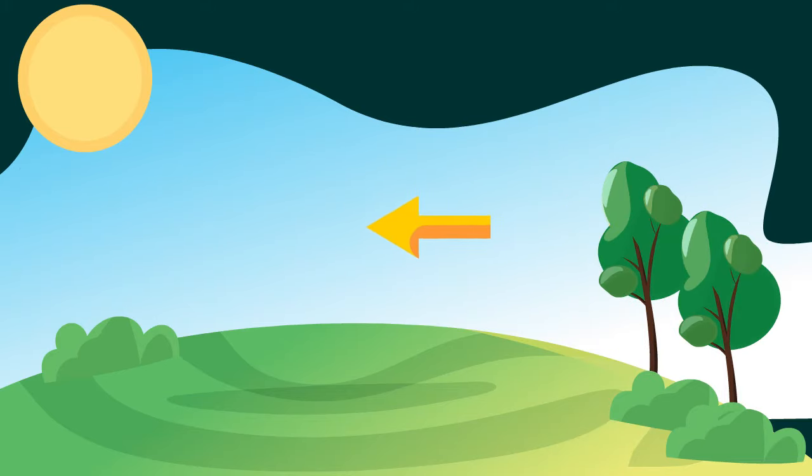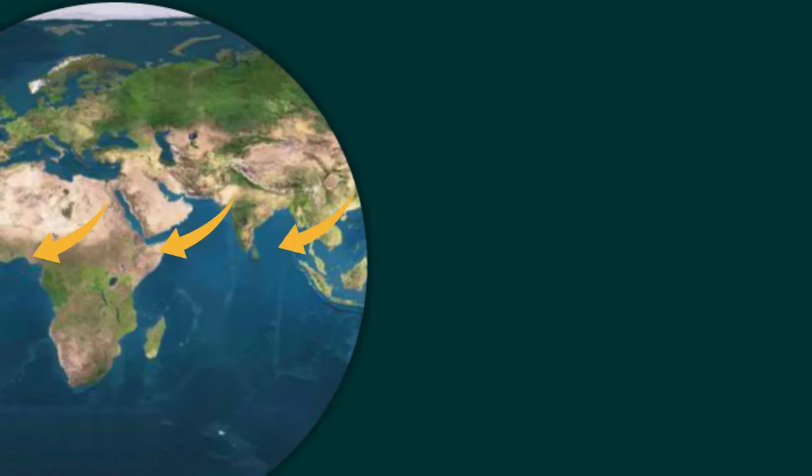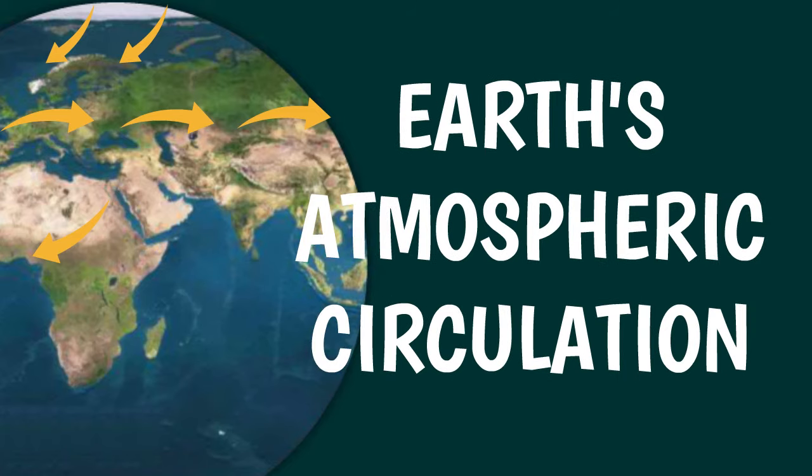Wind direction and wind speed can change from place to place and from day to day depending on the weather. However, if you keep track of it for a longer time period you will notice a certain regularity, because globally the movement of air masses follows an organized pattern known as global atmospheric circulation.